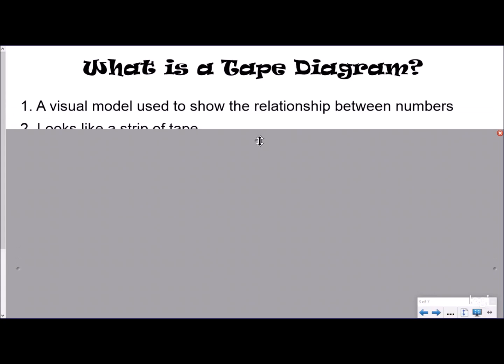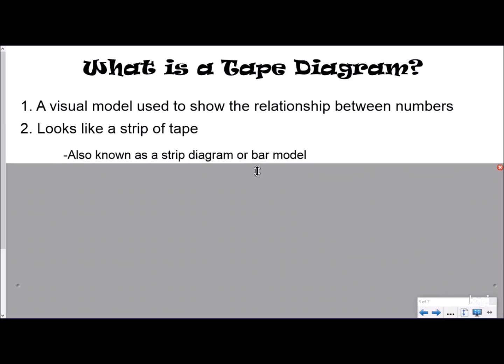So first of all, what is a tape diagram? We touched on this in our last video about tape diagrams and whole numbers, but just in case you didn't watch that, we'll touch on it again. A tape diagram is a visual model used to show the relationship between numbers. It looks like a strip of tape.